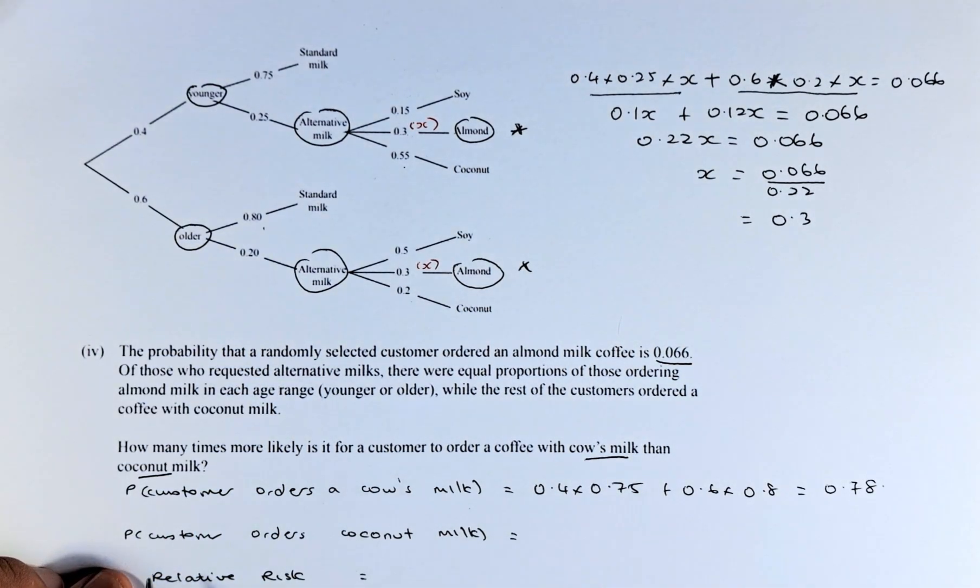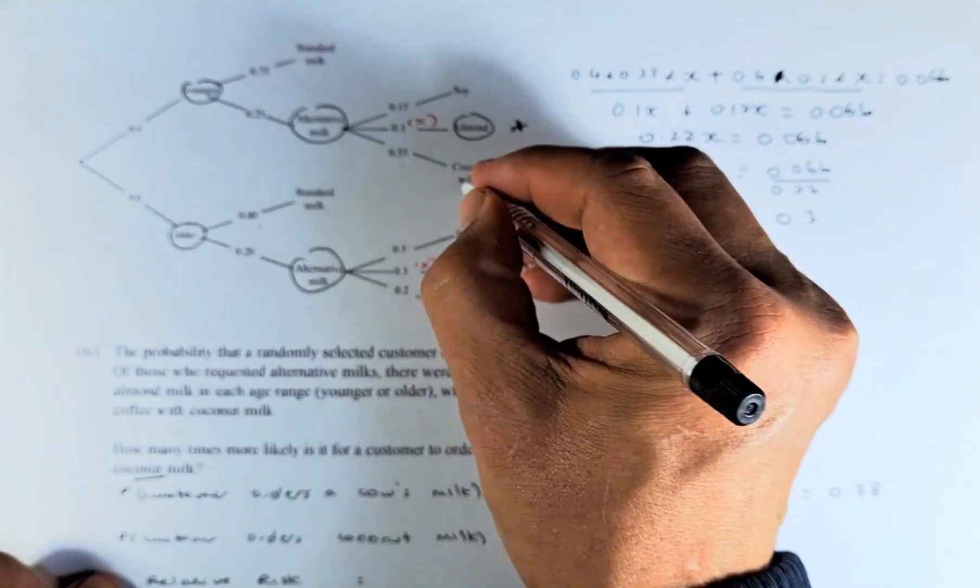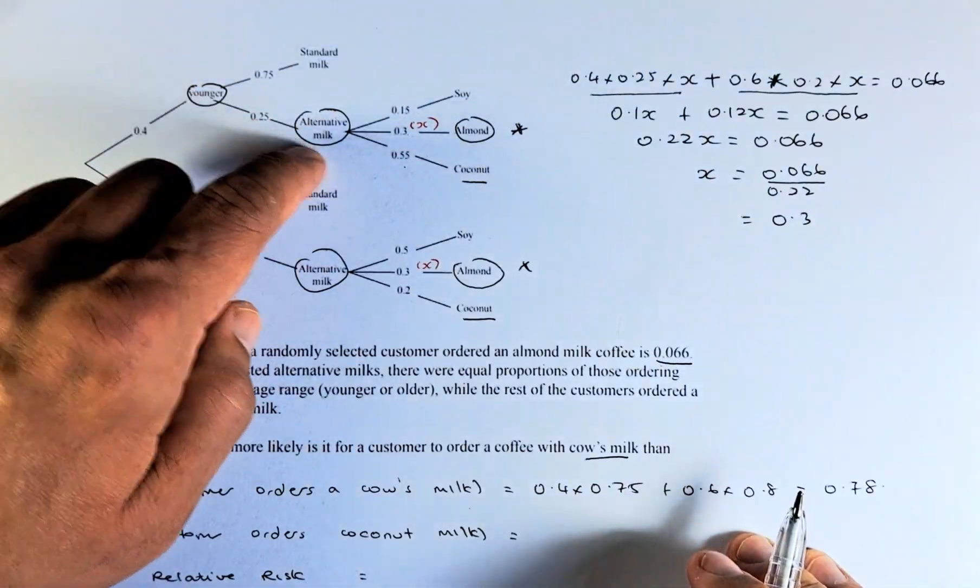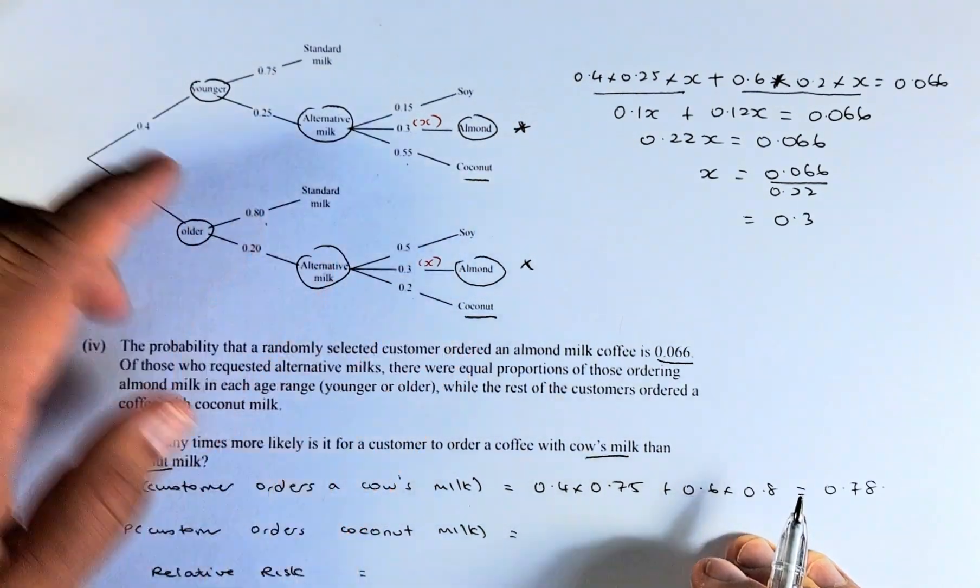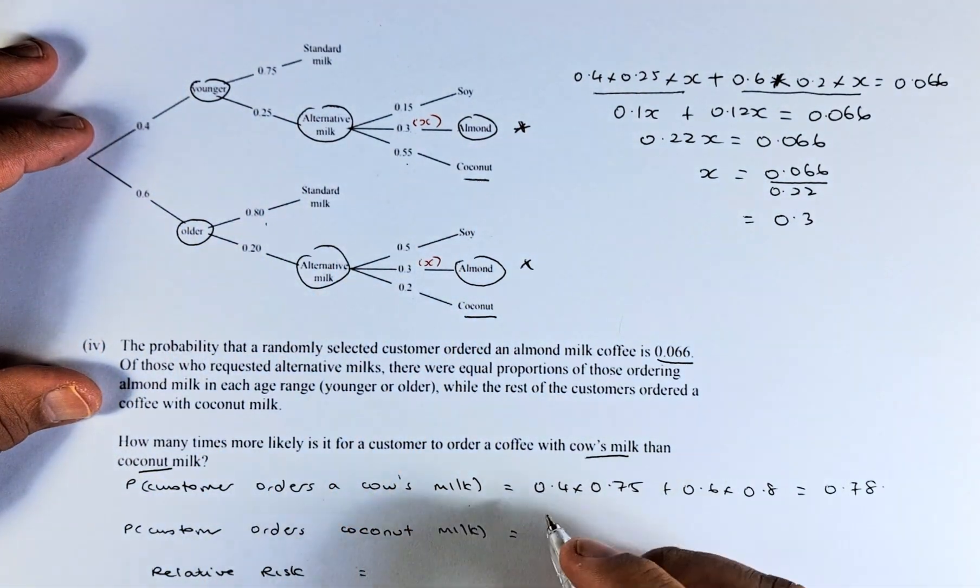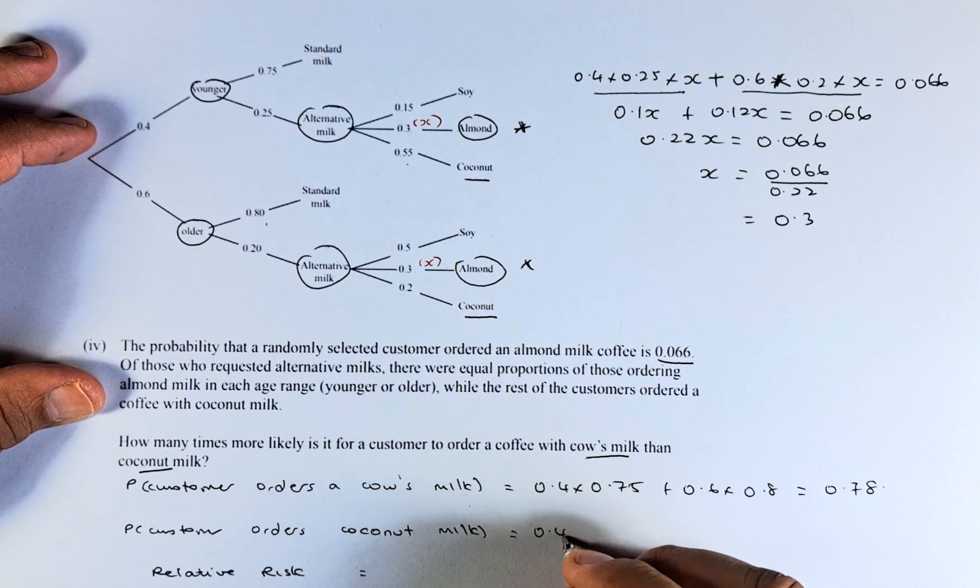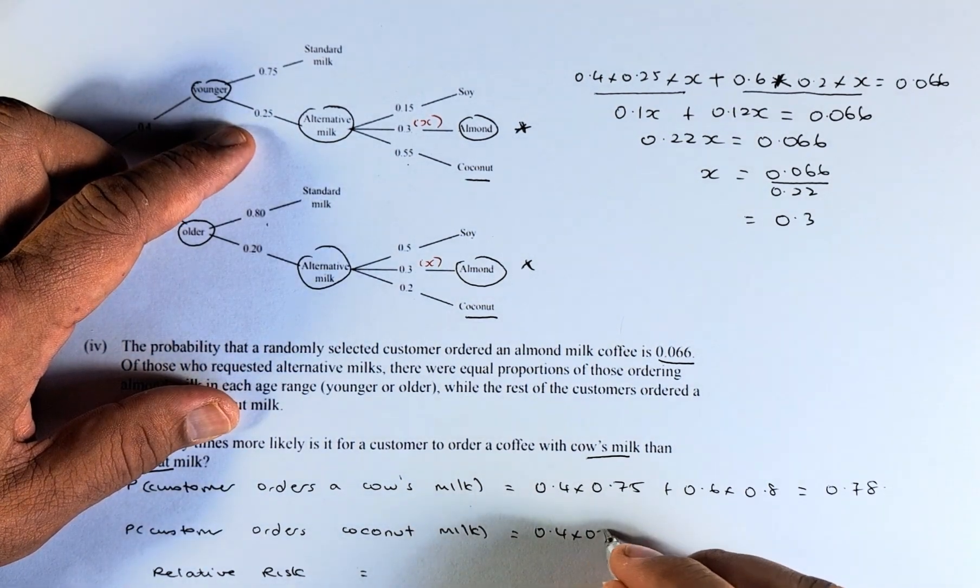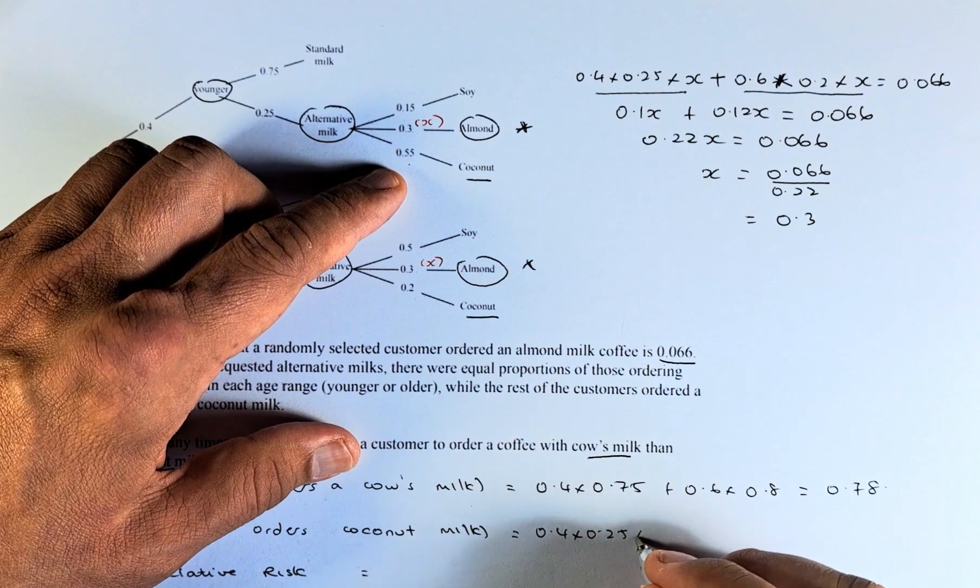Similarly, what is the probability of customer order coconut milk? It's there here. So it will be younger alternative coconut or older alternative coconut. So we are going to start with the younger, so 0.4 alternative 0.25 x 0.55.